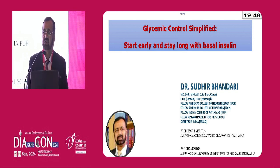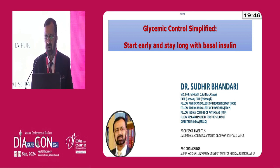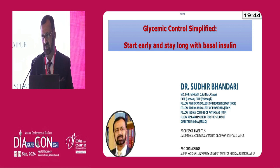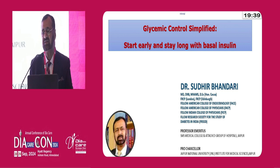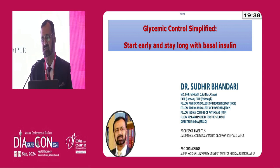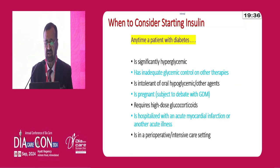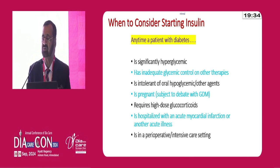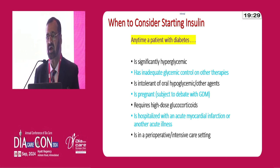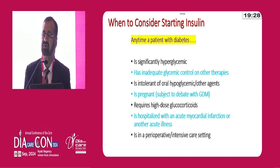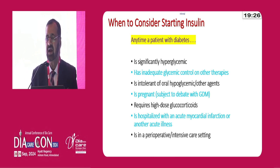The bottom line is that whenever we see a diabetic patient, we need to have perfect glycemic control. We need to understand the pathophysiology of diabetes — how diabetes takes a turn with the passage of time. The day diabetes is diagnosed, a significant proportion of beta cells are already knocked out, and over time all type 2 diabetic patients gradually become insulin-deficient and start behaving like type 1.